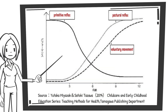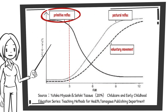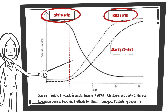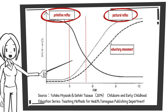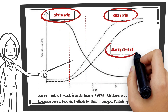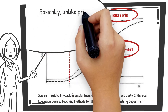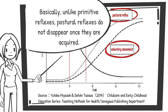From around three months of age, the primitive reflexes are gradually suppressed, at which time the postural reflexes begin to appear. The performance of the postural and primitive reflexes is reversed around five months of age, when the baby is able to perform voluntary movements such as turning at will. Unlike primitive reflexes, postural reflexes do not disappear once they are acquired.